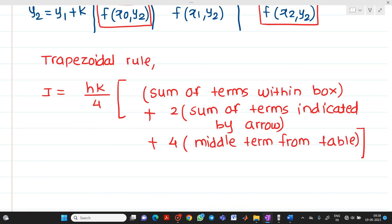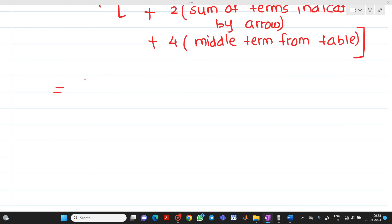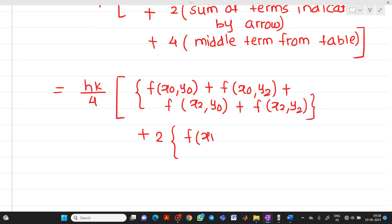In other words you will be able to write this formula as hk upon 4. Now what are the elements which are present in the box? If you see it will be f of x0 y0 plus f of x0 y2 plus f of x2 y0 plus f of x2 y2 plus 2 into sum of the terms which are indicated by arrow. So if you see it will be f of x1 y0.